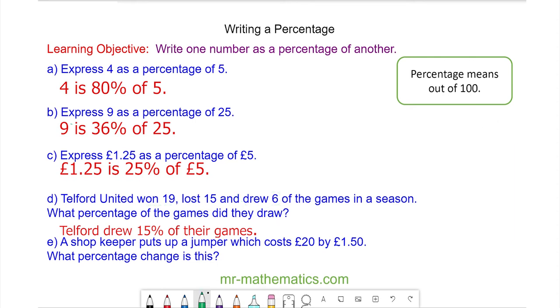And finally for question E, a shopkeeper puts up a jumper which costs £20. So out of the original £20, the increase was £1.50.